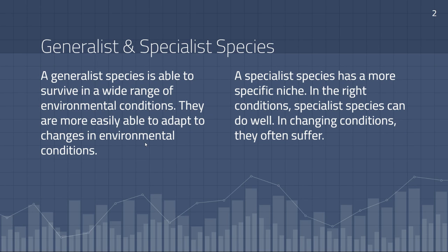One of the topics we talked about this unit had to do with generalist and specialist species. A generalist species is a species that's able to survive in a wide range of environmental conditions. There are lots of different environmental conditions that can affect individuals within a population, for example the temperature, the pH. Generalist species are typically more easily able to adapt to changes in those environmental conditions.